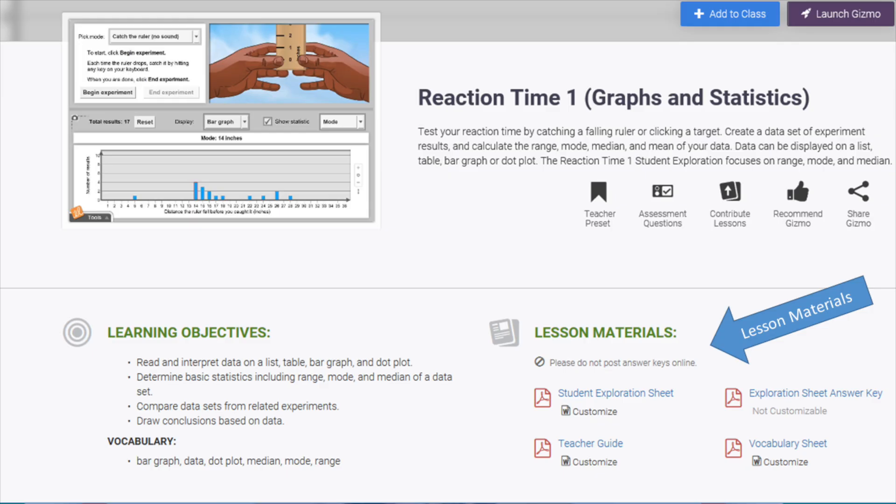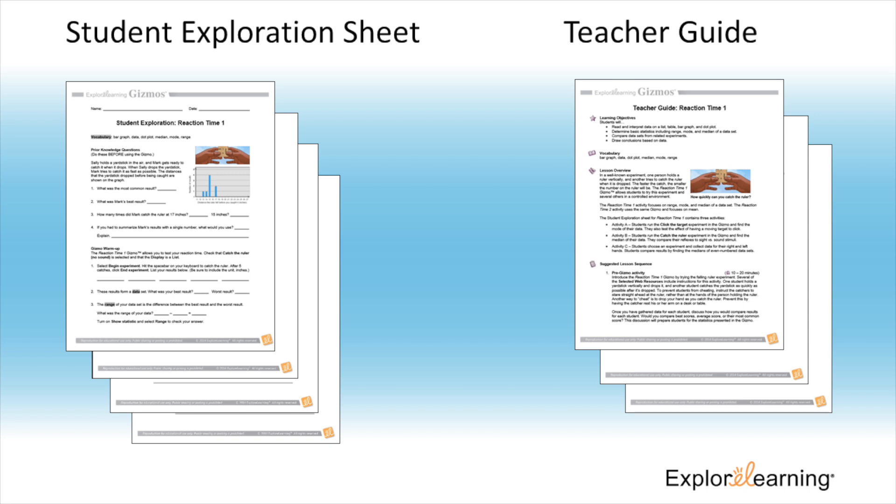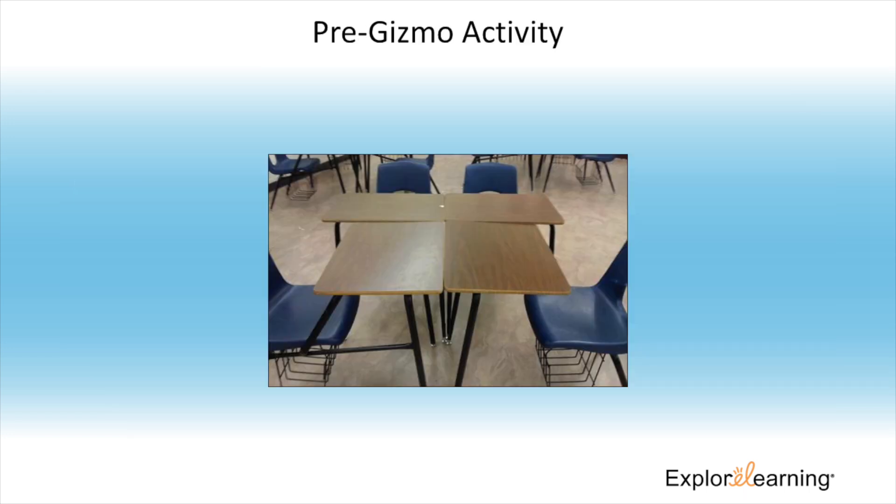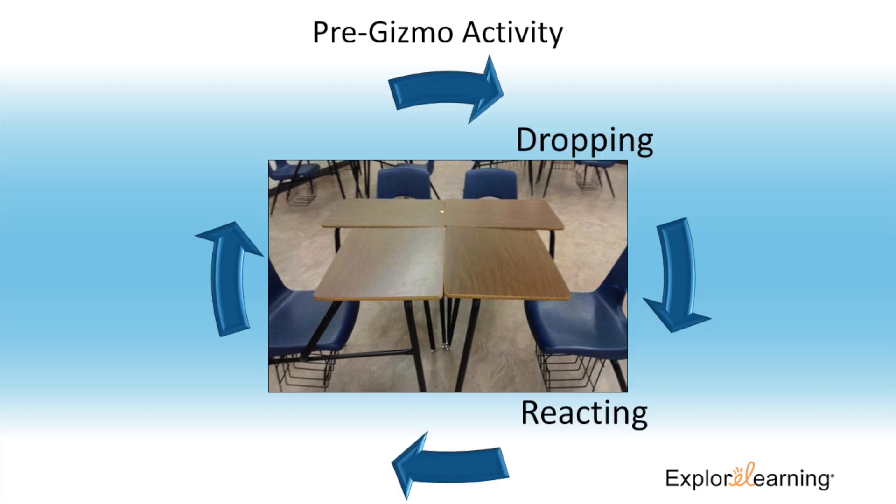Every gizmo has a set of lesson materials. I would like to give you some ideas of how this gizmo can be used within your classroom. As a pre-gizmo activity, I like to allow students to experience the ruler drop activity in real life. With teams of four or more, students rotate the roles of dropping, reacting or catching, timing, and recording. Make sure to use a yardstick for slower responses and have the reaction person rest their hand on a desk to get an accurate reading.